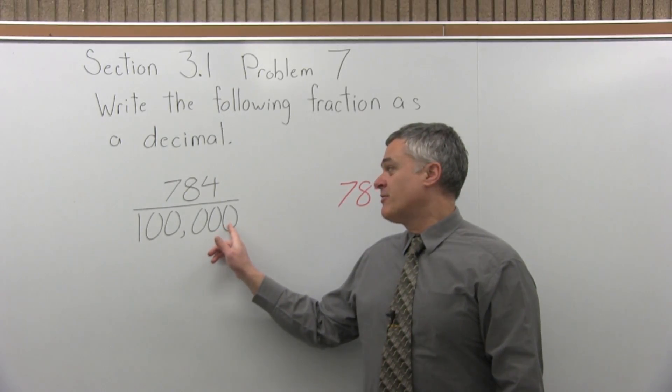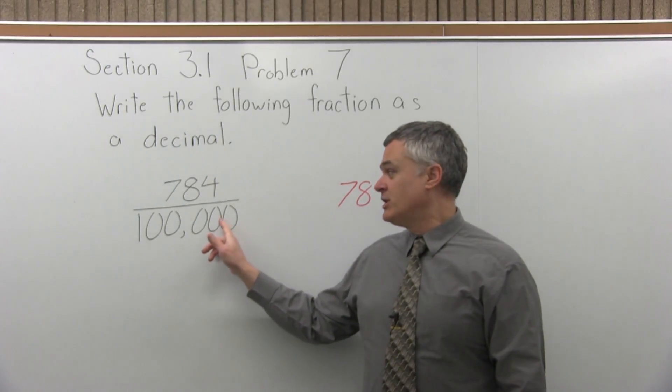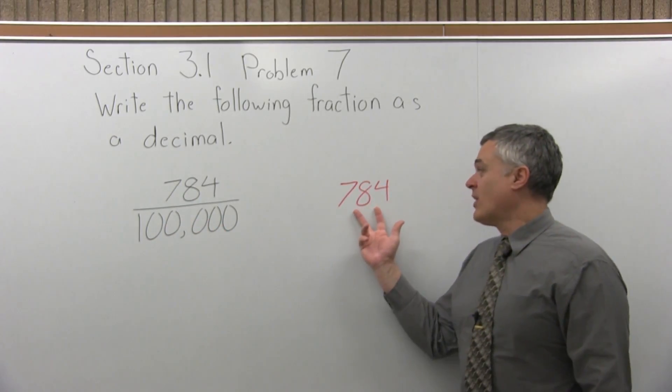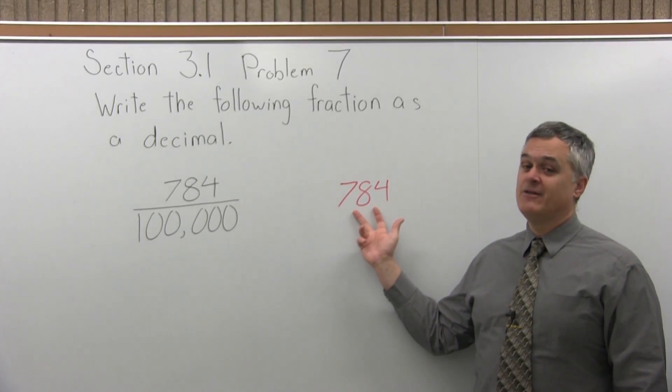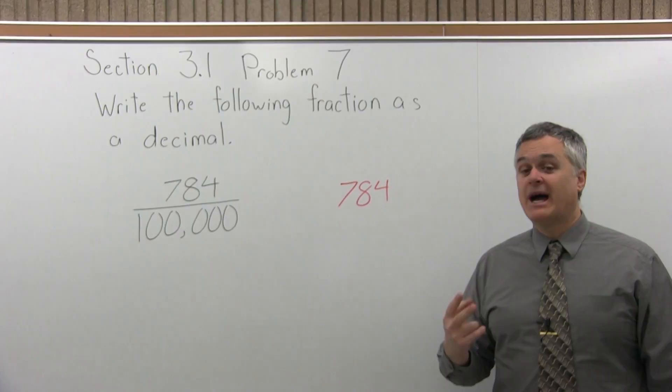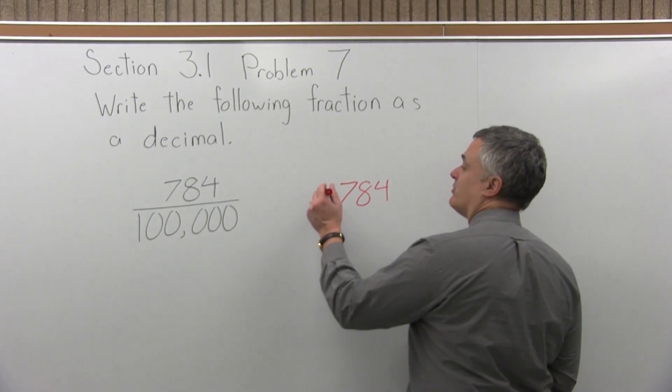Now the denominator of my fraction has five zeros: one, two, three, four, five zeros. So 784 has three digits. I need five places after the decimal, so I have three so far. I need two more places, which will be two more zeros.